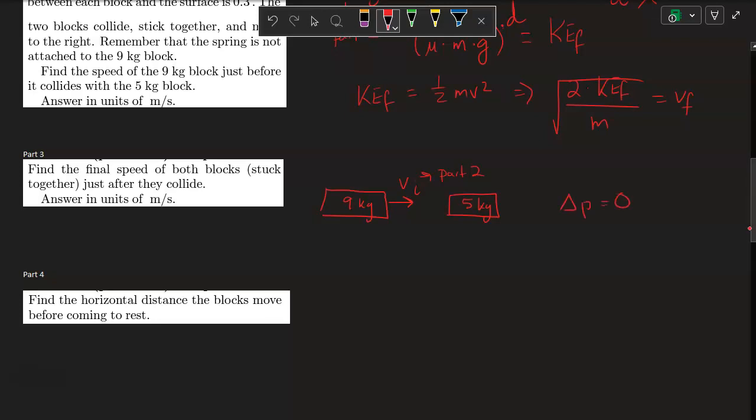Delta P will equal 0. Only the 9 kilogram mass has momentum. So m1 times this v initial from part 2 should equal m1 plus m2 times their unknown combined final velocity. m1 times v initial over the sum of m1 plus m2 will give you this final velocity for part 3.